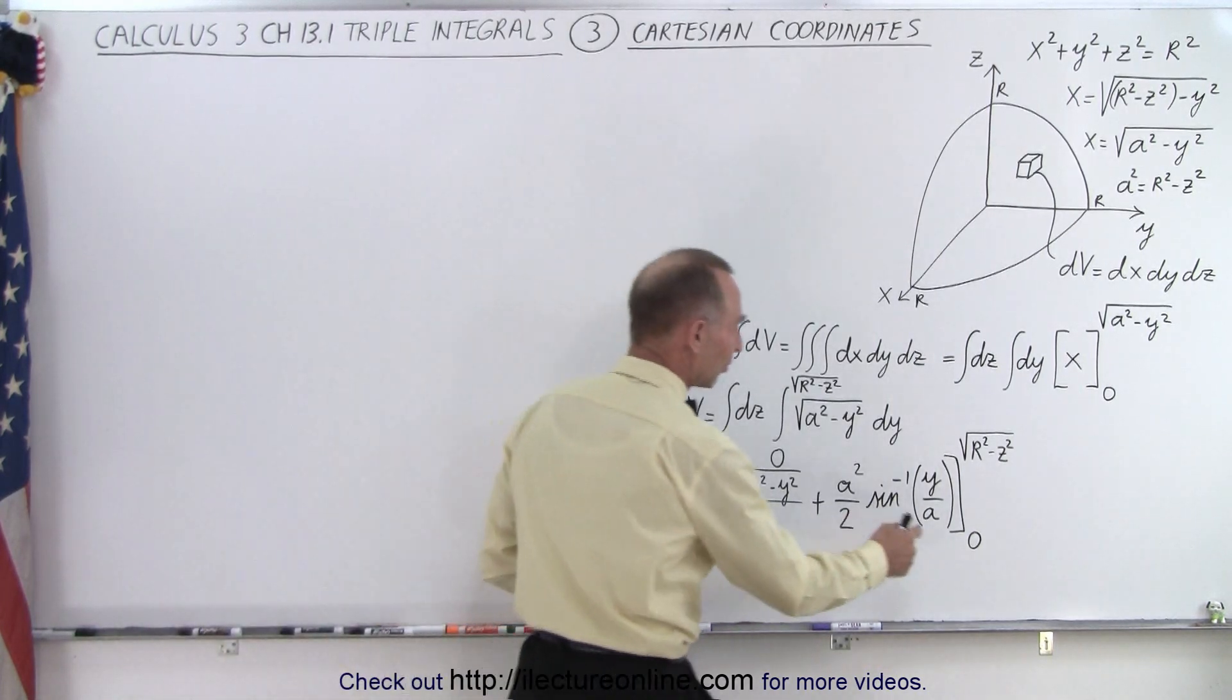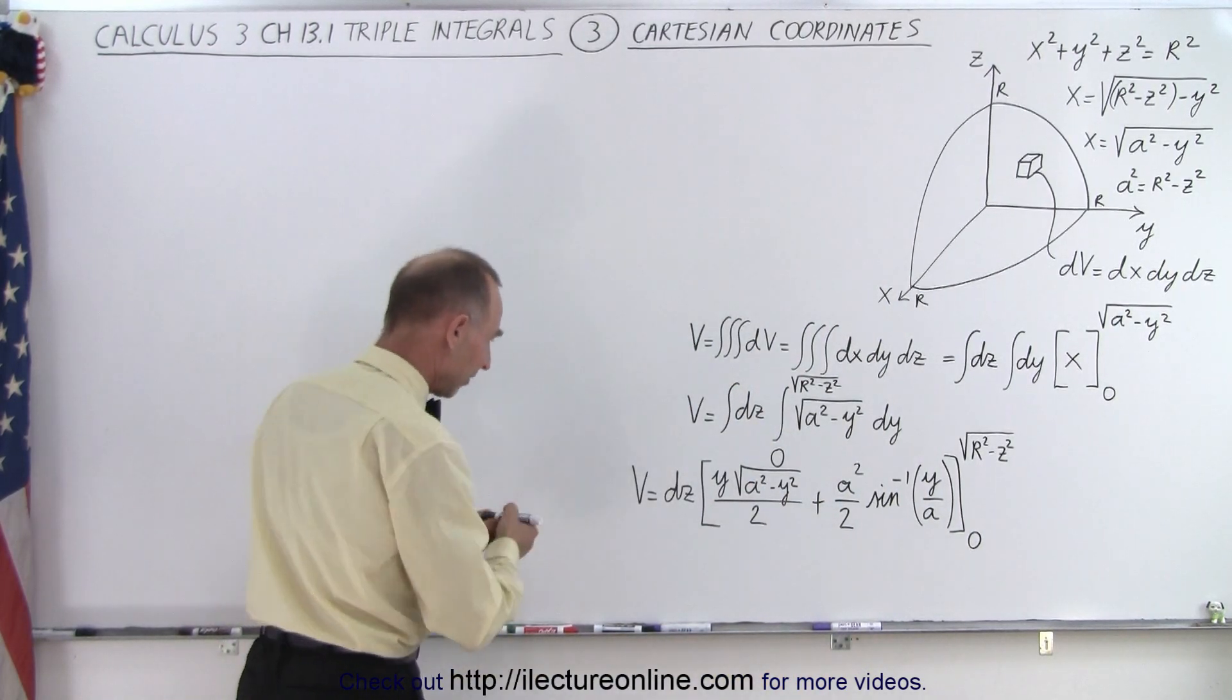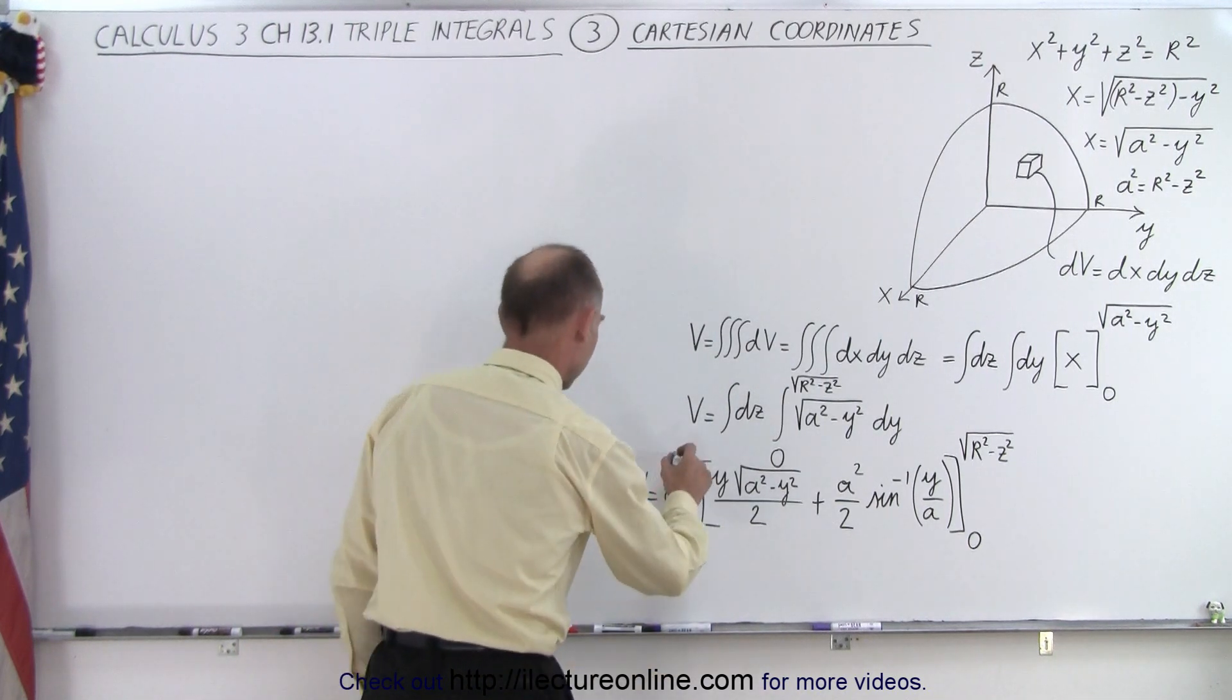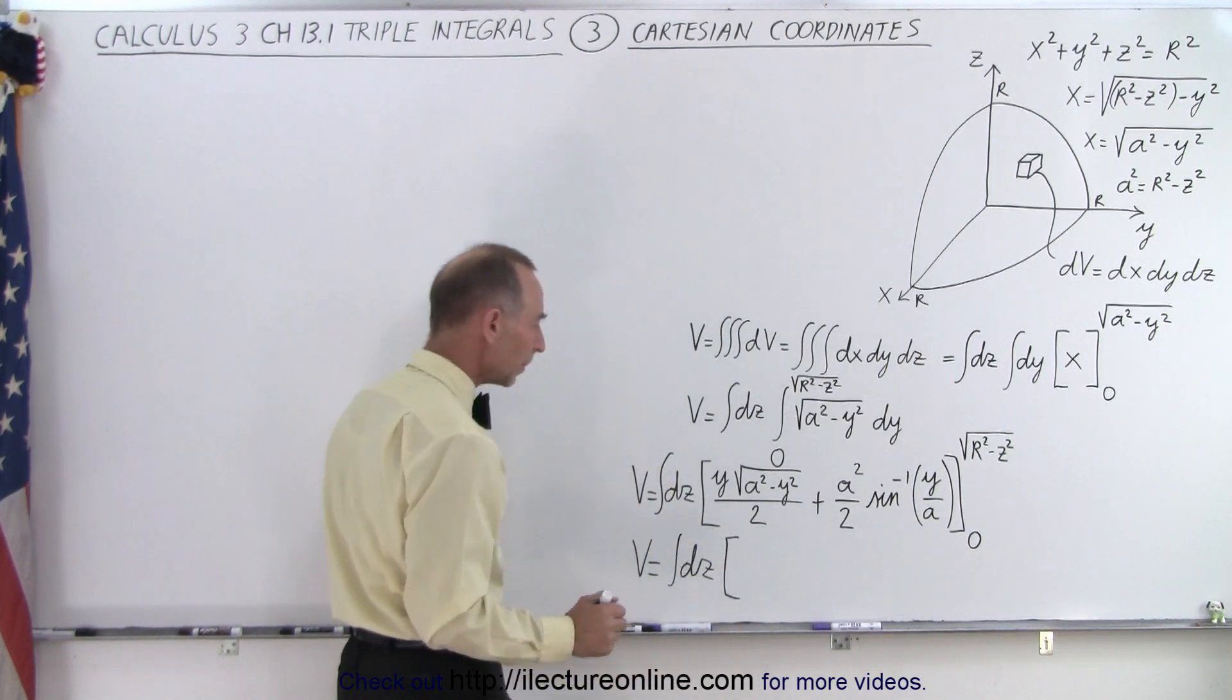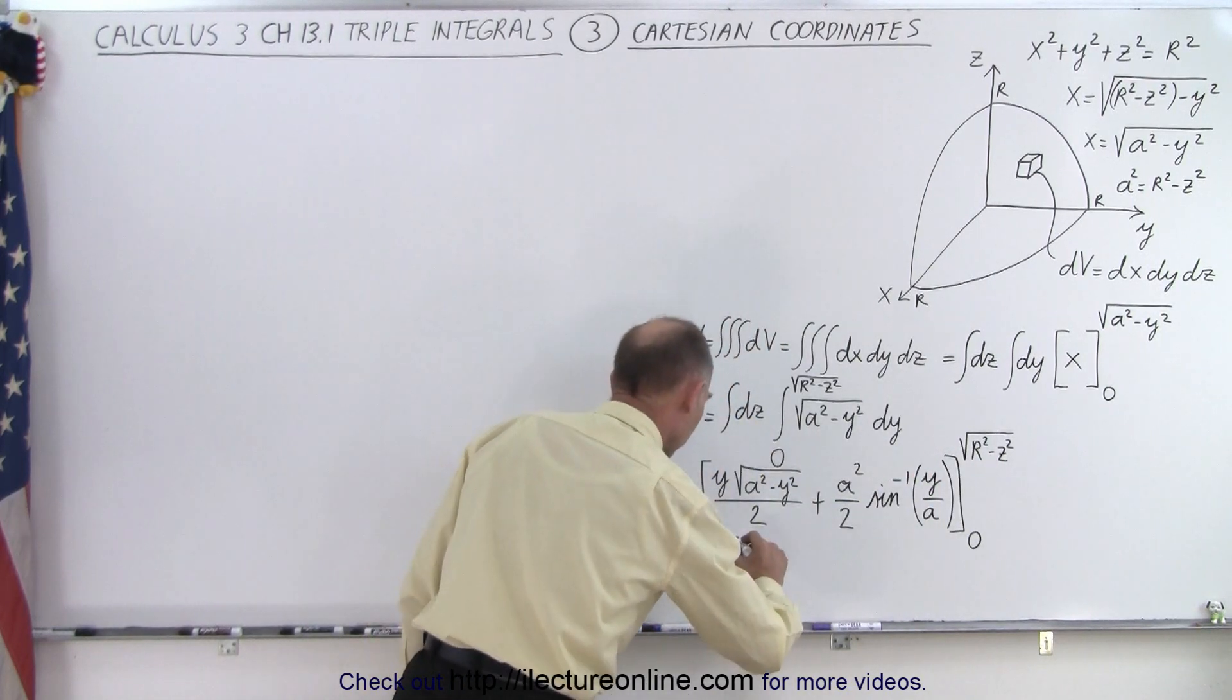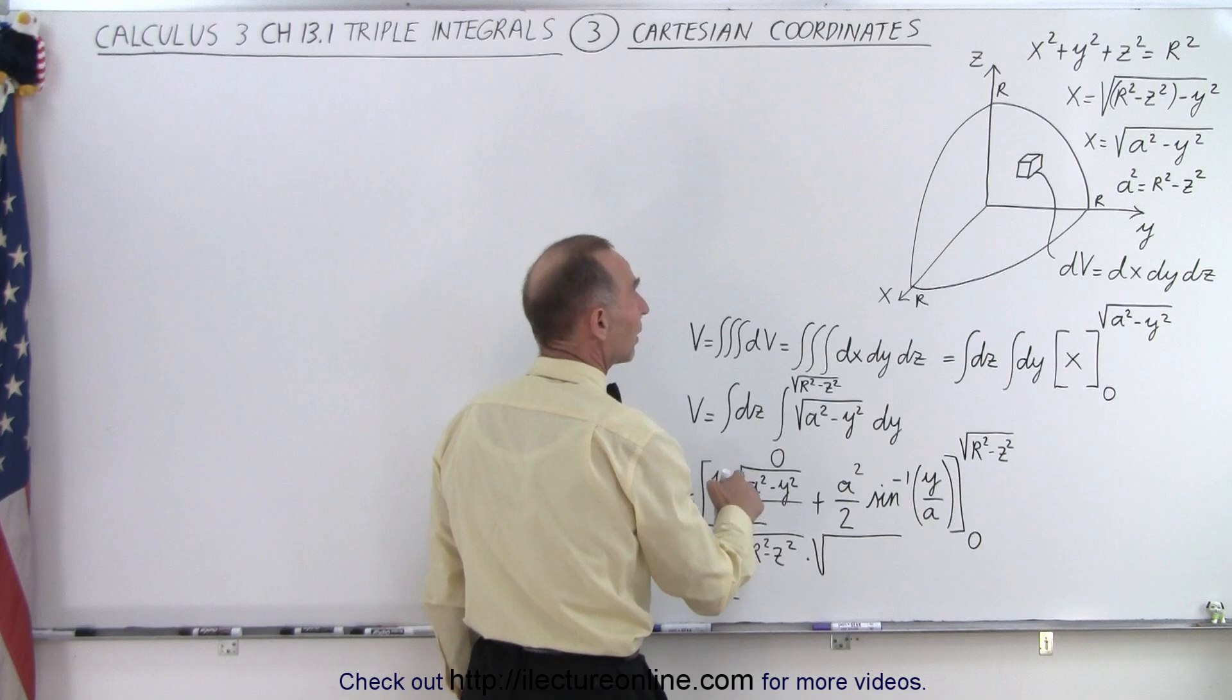And since the limits are from 0 to √(r² - z²), we can then go ahead and plug that in. So v is equal to the integral of dz times, when we plug in for y this quantity right here, we get √(r² - z²) times √(a²), which is √(r² - z² - y²).